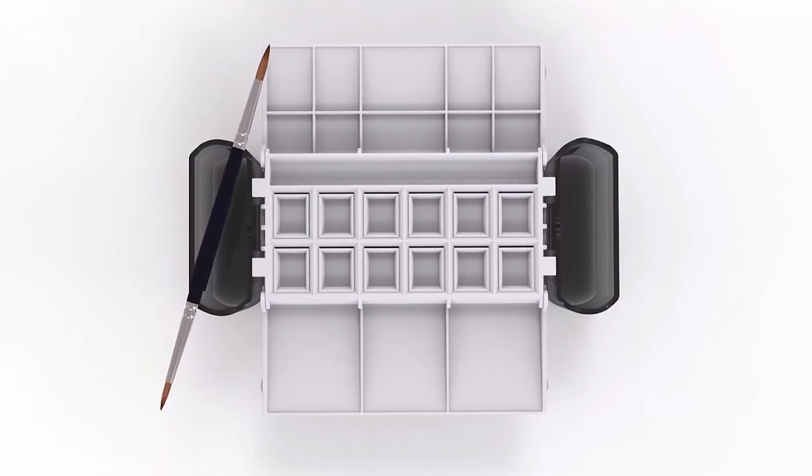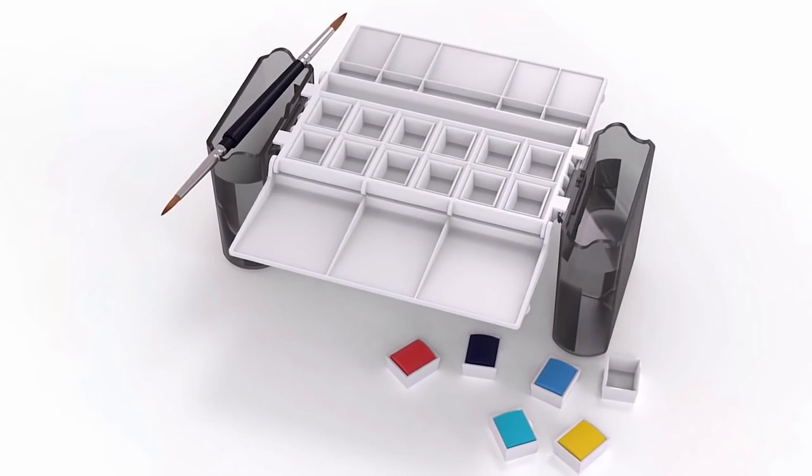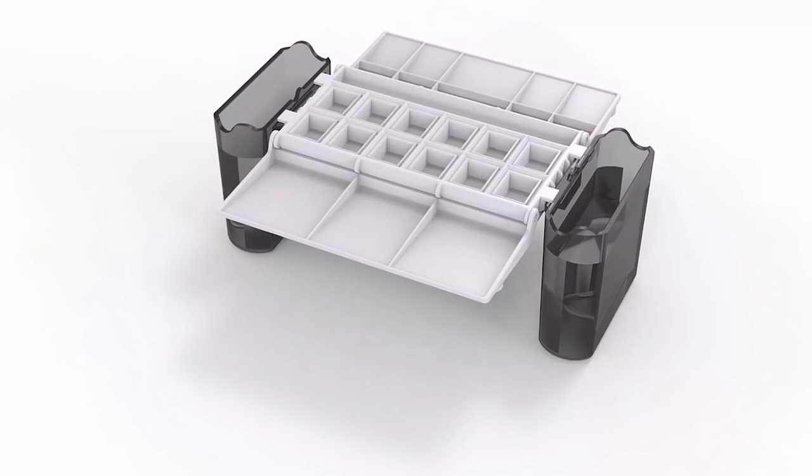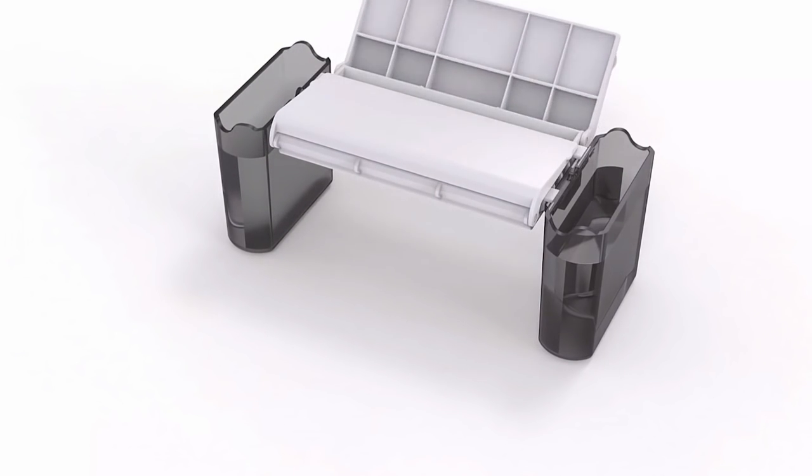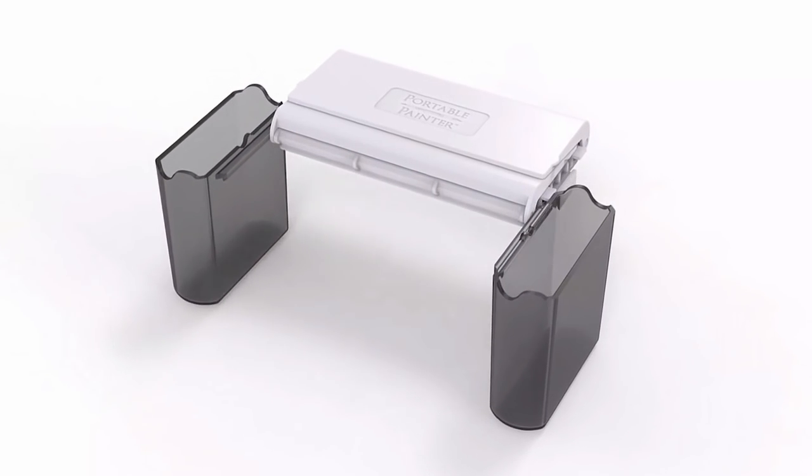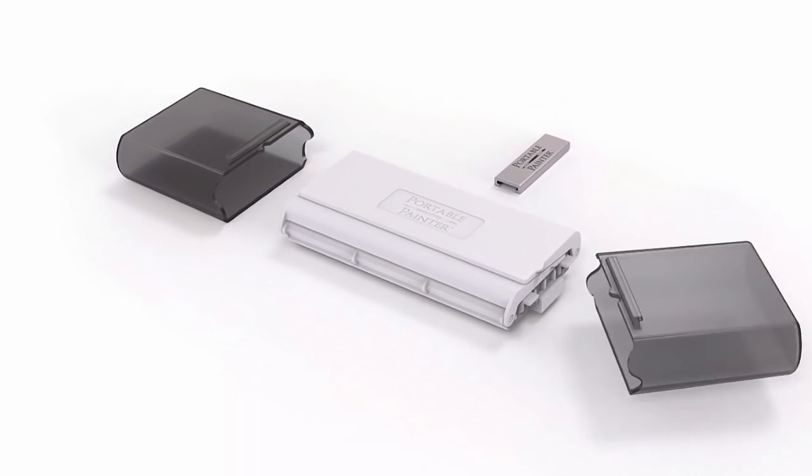The portable painter is designed to hold 12 empty half pans so that you can use your own favorite color palette. When the set is closed, the built-in water containers convert into an outer case that's pocket-sized and ready for travel.